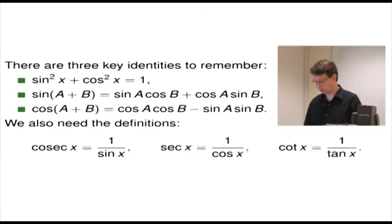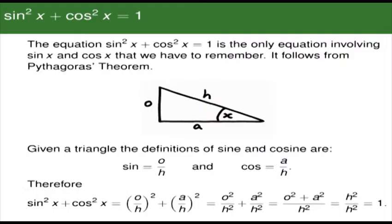Let's look at that fundamental equation: sine squared x plus cosine squared x equals 1. This equation is the only equation involving sine x and cosine x that we have to remember. It actually follows from Pythagoras' theorem. If we take a right-angled triangle and label up the angle x, we have the opposite, the hypotenuse, and the adjacent. With such a triangle, the definitions are: sine is opposite over hypotenuse, and cosine is adjacent over hypotenuse.